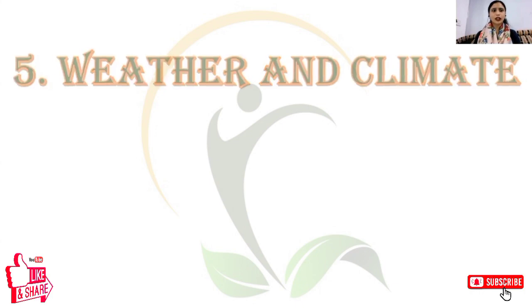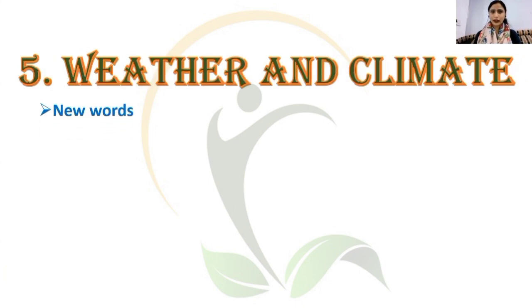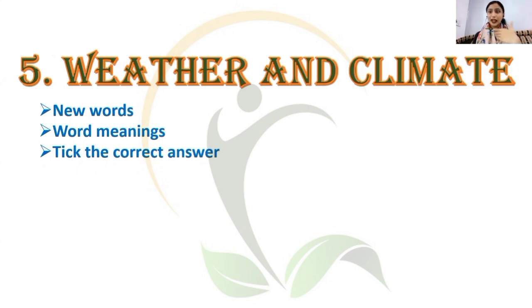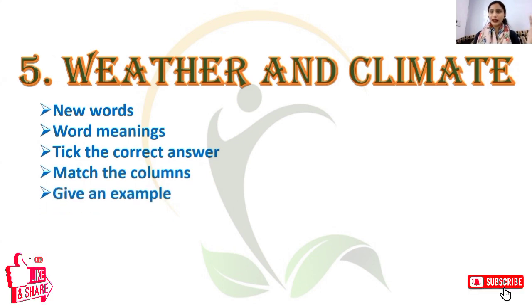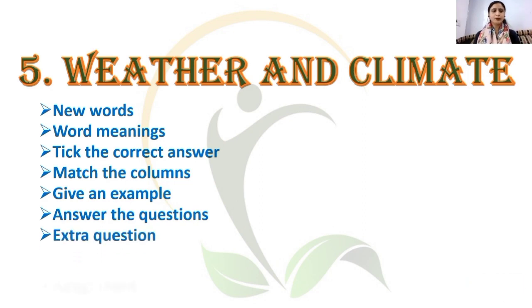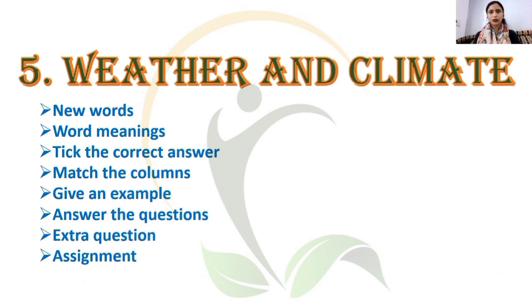So let us quickly go through the points we are going to cover under this module. The first thing we are going to write down is 20 new words. Then there are some word meanings, then pick the correct answer — questions from your splash. Then match the columns, give an example, and questions to answer — around five to six questions from your splash. Then one extra question, and finally I will be concluding this module with an assignment.